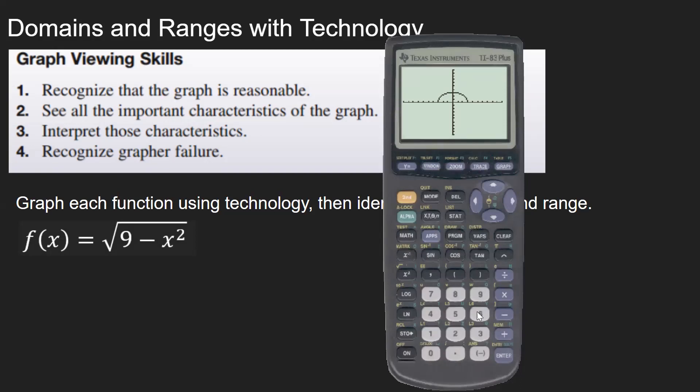And then you can see that it looks like half of an oval. If you hit zoom five, which is zoom squared, it squares up the viewing window. If you never noticed,